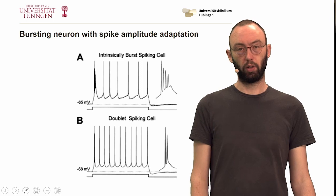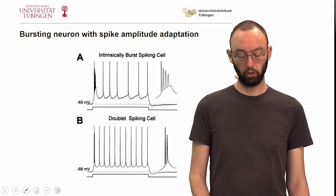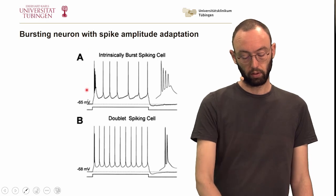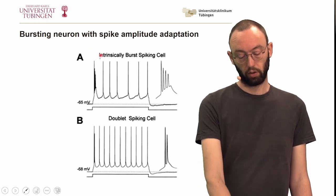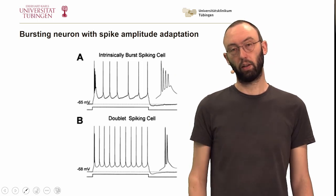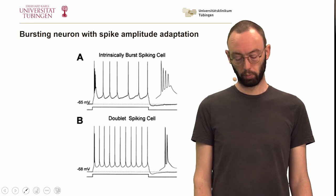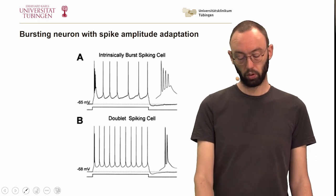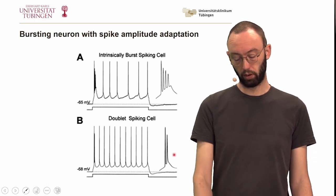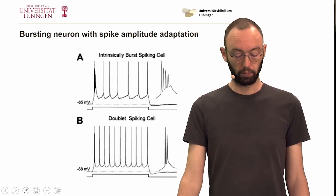As I said, there can be factors like spike amplitude adaptation, and in this case here, this is a neuron that fires bursts, and the first spike in the burst is bigger than the later spikes. So a burst is just a very rapid sequence of spikes. Or it could be such a doublet spiking cell where the initial burst just consists of two spikes.